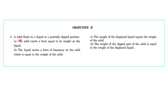First question: a solid floats in a liquid in a partially submerged position. The solid exerts a force equal to its weight on the liquid. The liquid exerts a buoyancy force on the solid equal to the weight of the solid. The weight of the displaced liquid is equal to the weight of the solid. The weight of the submerged part of the solid is equal to the weight of the displaced liquid.